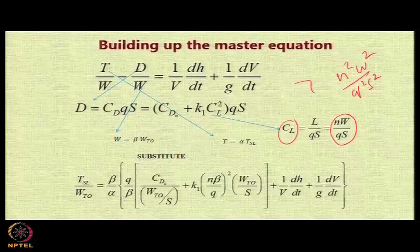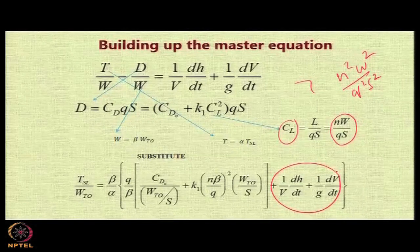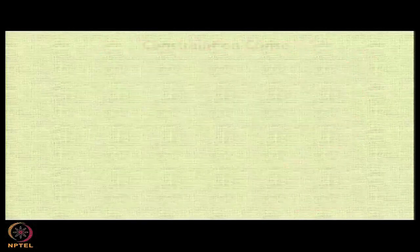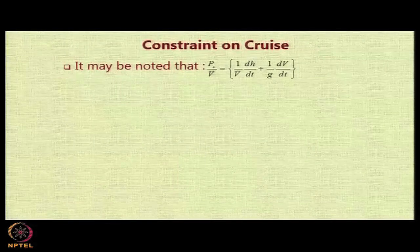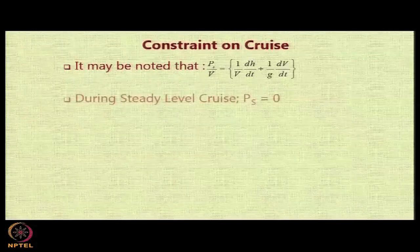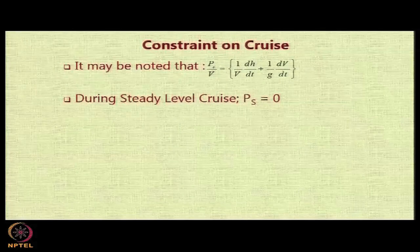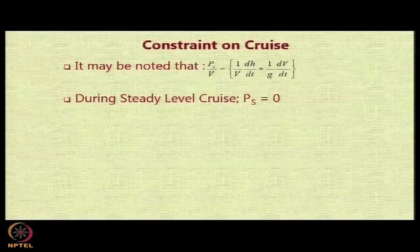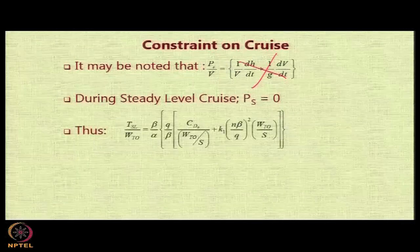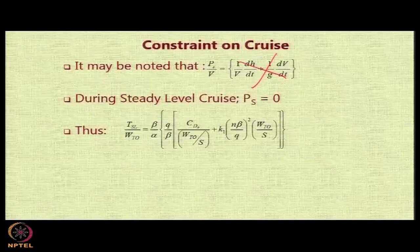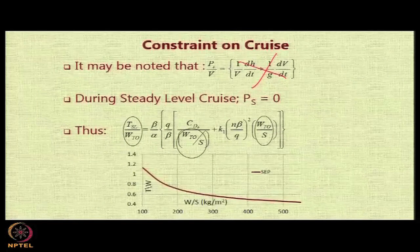It may be noted that the expression on the RHS, 1 by V dH by dt plus 1 by G dV by dt, during steady level cruise we do not have any excess power. This whole term is going to be 0. Therefore, the master equation for cruising flight will convert into an expression as shown here; the terms on the end are going to be 0.